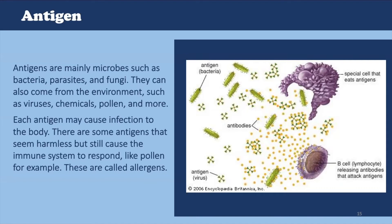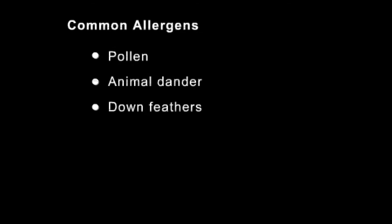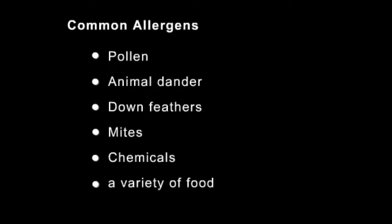Now let us take a look at a video to understand how our body's own immune system works. An allergy is an overreaction of the immune system to a normally harmless substance called an allergen. Common allergens include pollen, animal dander, down feathers, mites, chemicals, and a variety of foods.